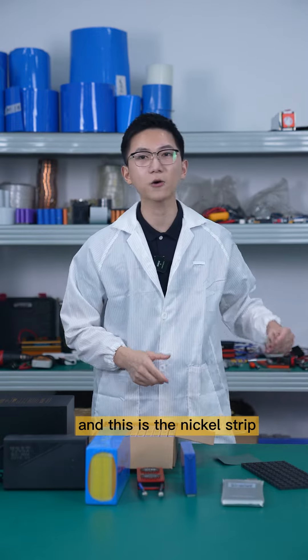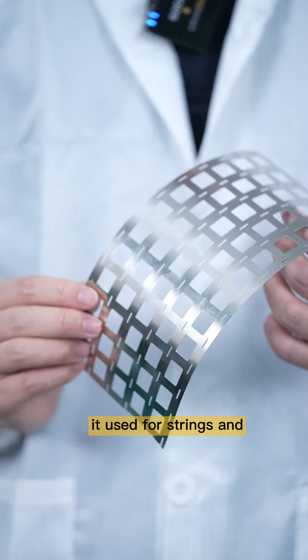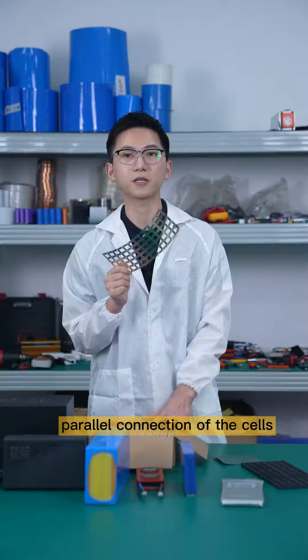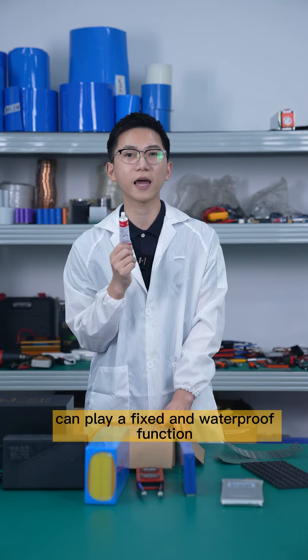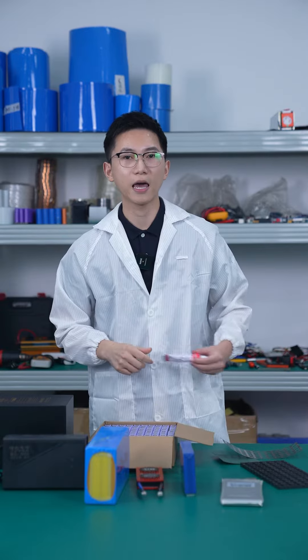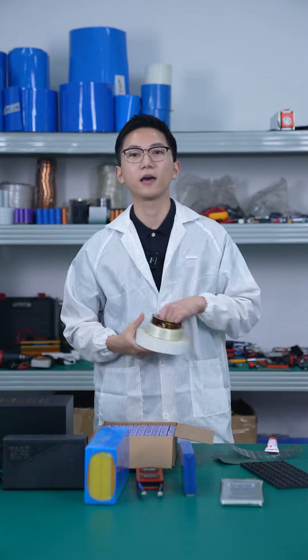This is the nickel strip. It's used for series and parallel connections of the cells. And this one is the silicon glue, which can provide a fixed and waterproof function.